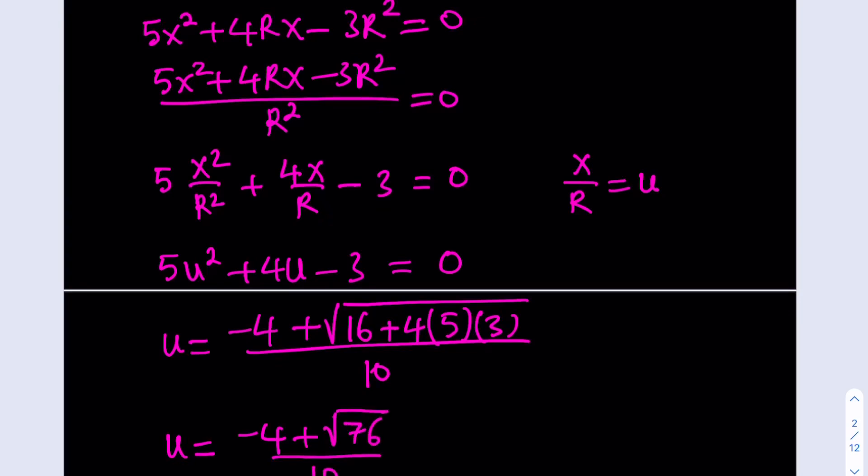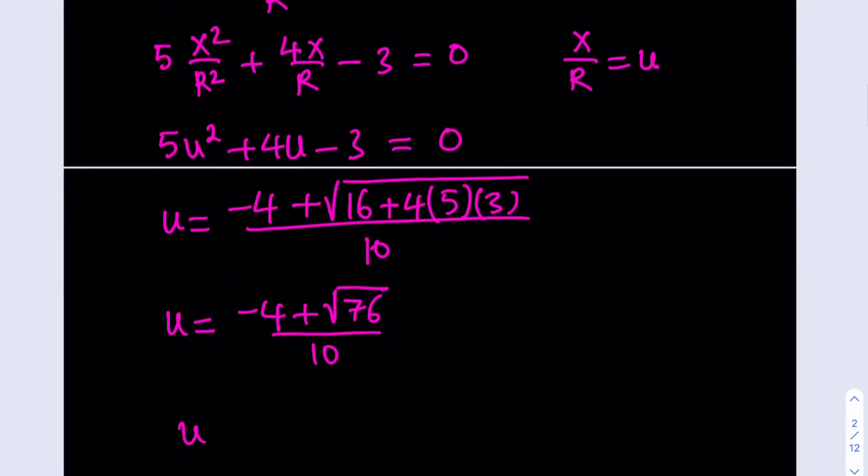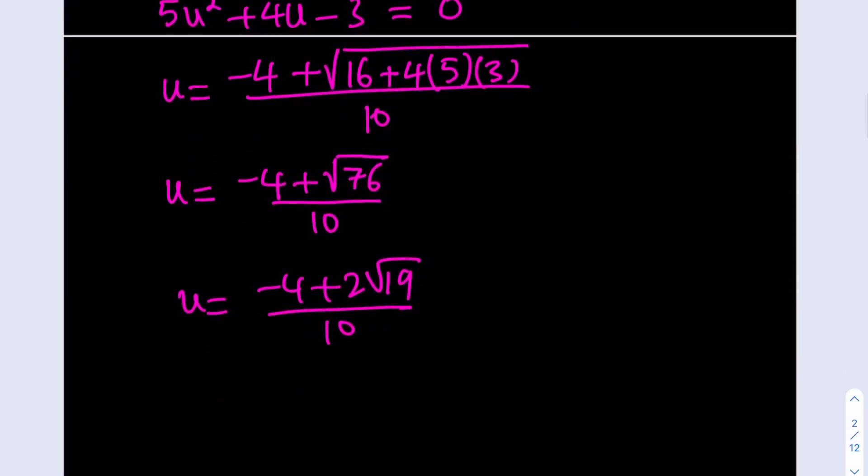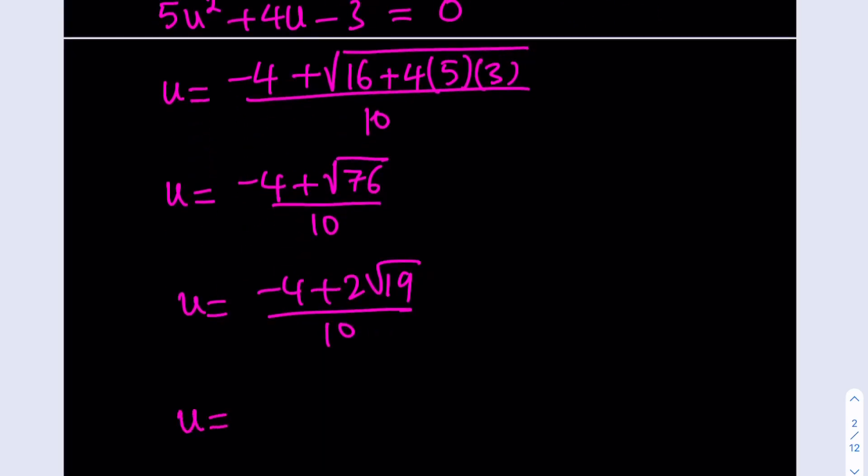I can write this as negative 4 plus 2 root 19 divided by 10, and I can divide everything by 2 and that equals square root of 19 minus 2 divided by 5.